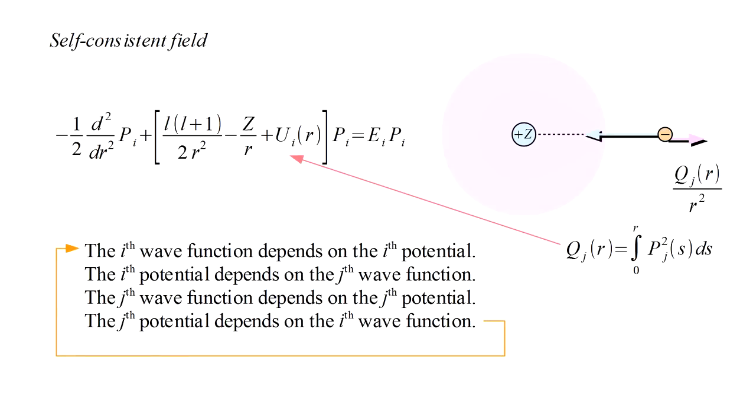Hartree found that if he started with some guess for the orbitals, and then ran through this circular process enough times, the orbitals eventually converged. The final orbitals formed a self-consistent set. Every orbital ends up being consistent with the equations for the other orbitals.